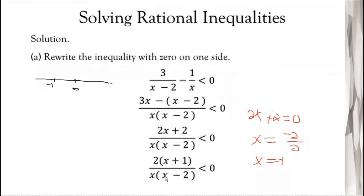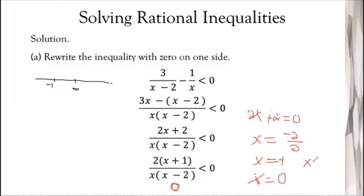Now for the denominator: if either factor becomes 0, the denominator becomes 0. By the zero property, any number multiplied by 0 is 0. If x = 0, then the denominator is 0, making the statement undefined — so x = 0 is not allowed. Also, if x - 2 = 0, then x = 2. So we have critical values at x = 0 and x = 2.